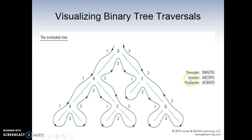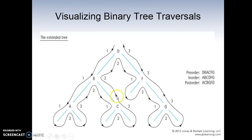In-order — left, root, right — should give us the list in sorted order: A, B, C, D, F, G. For post-order — left, right, root — we go all the way to the leftmost node, A. Then go to the right sibling, C. Then the parent root, B. Then the right subtree gives us G, F, and finally the root D. So post-order is: A, C, B, G, F, D.